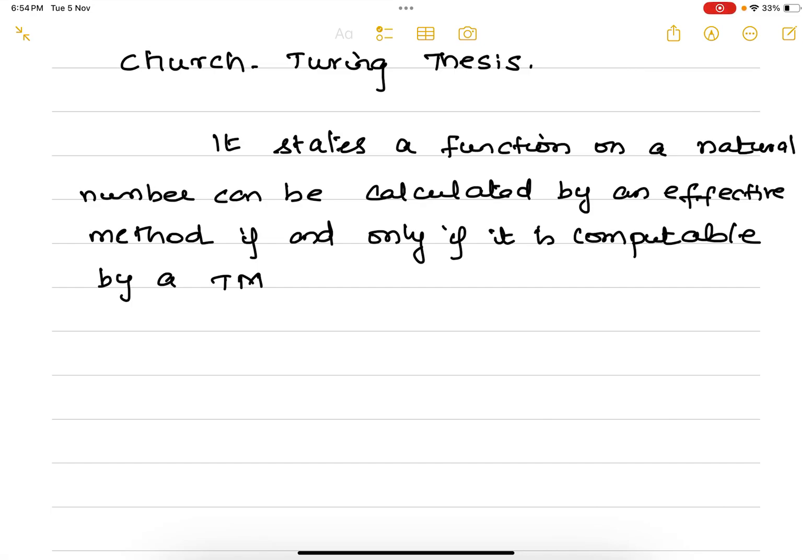Church-Turing thesis. This thesis states that a function on a natural number can be calculated by an effective algorithm if and only if it is computable by a Turing machine.